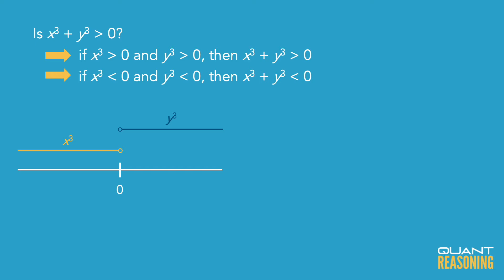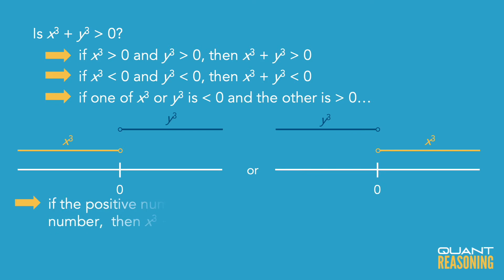then when you cube them, the positive one will still be farther away from zero than the negative one is. Even if they're fractions, the fraction that is farther away from zero will still be farther away from zero when you cube both of them.